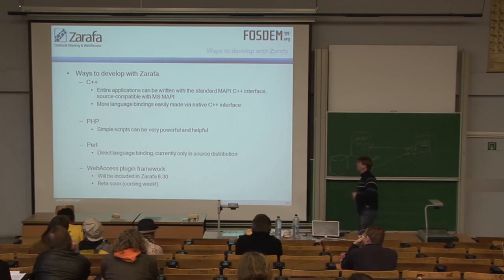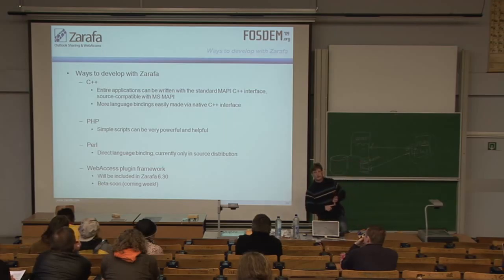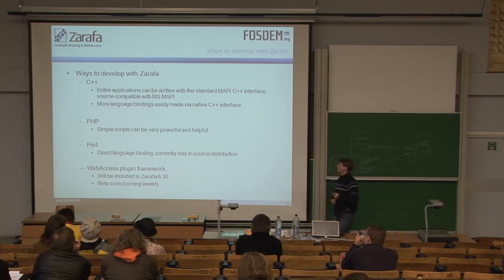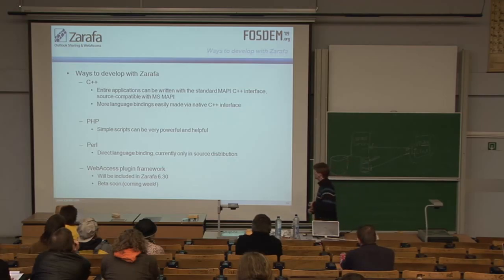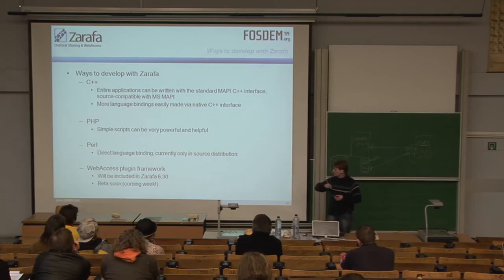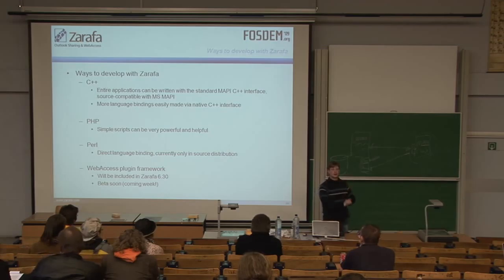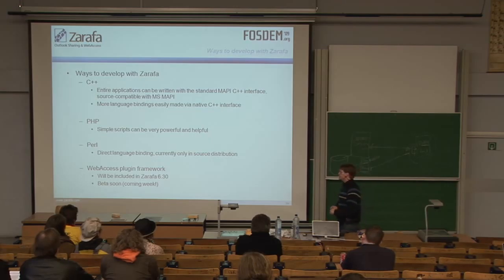The language wrappers we deliver at the moment are PHP, which makes really nice simple scripts and also makes our entire web access — so it's quite a comprehensive API. We haven't exposed the entire MAPI API through PHP, but almost everything you're going to need for scripting. Perl has the entire API, but it's currently only in the source distribution. And then there's the Web Access Plugin Framework, which lets you make plugins that integrate with the Ajax web access.